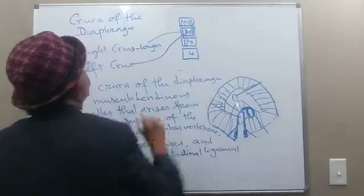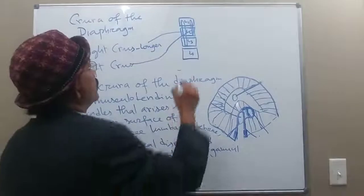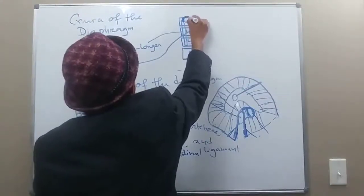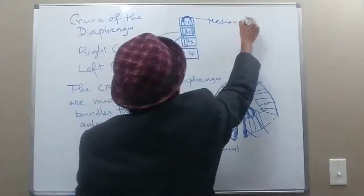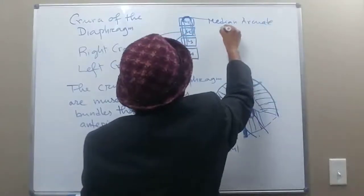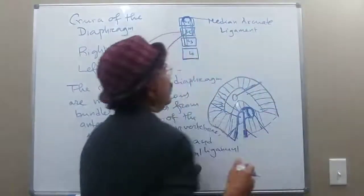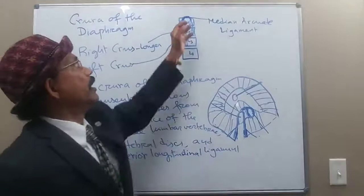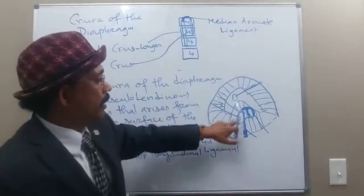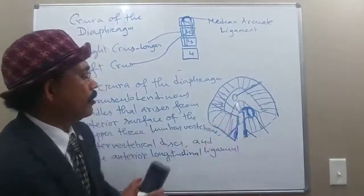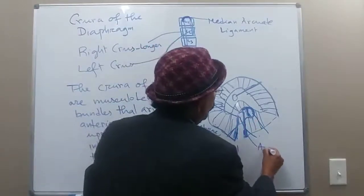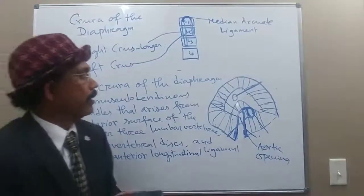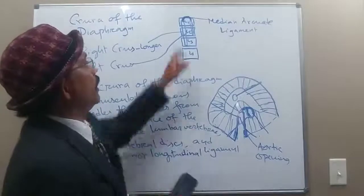The left crus arises from lumbar one and lumbar two, possibly to the upper part of lumbar three. These two crura are connected by the median arcuate ligament. The median arcuate ligament forms the anterior boundary of the aortic opening of the diaphragm, and the aorta passes behind it.